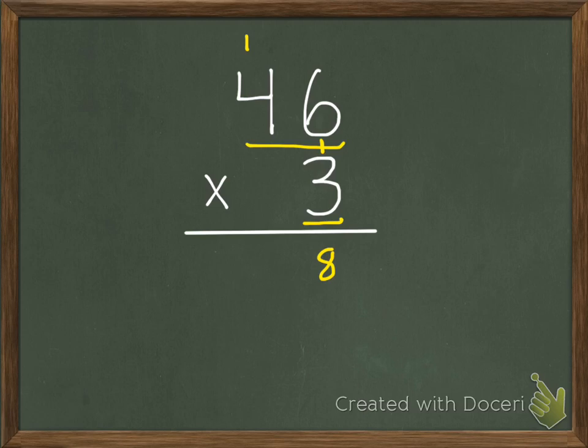Next, we multiply our 3 times the 4. 3 times 4 is 12, plus we have that 1 extra 10, so we're going to have 13.